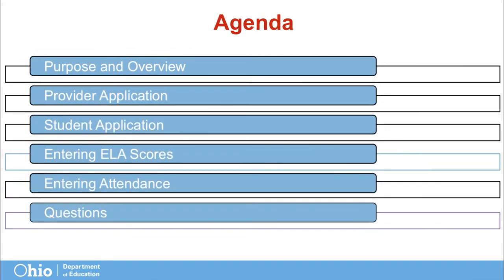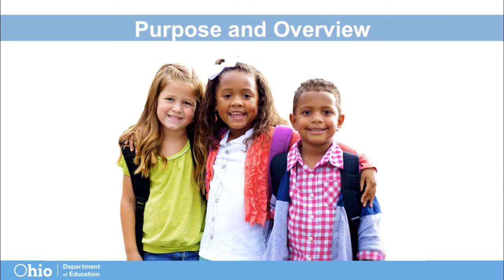Today we will be reviewing our purpose, talking about the provider application, and walking through the steps of completing student applications, entering ELA scores, and entering attendance. Please know that you can reach out to us at any time for answers. This presentation is for programs who use the Enterprise Application System to report program, teacher, and child-level data, and will provide an overview of the EAS system.